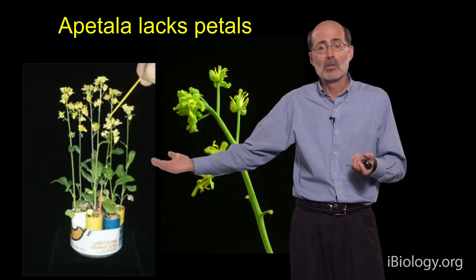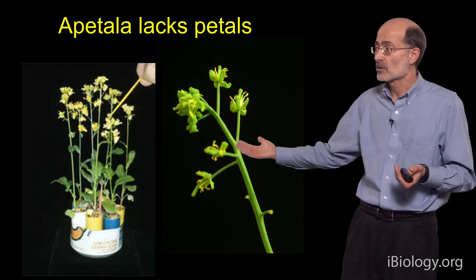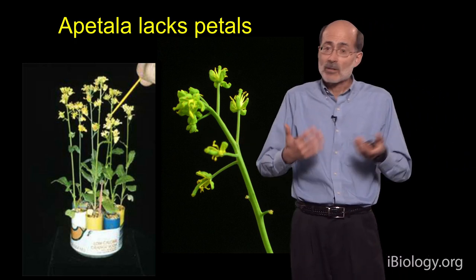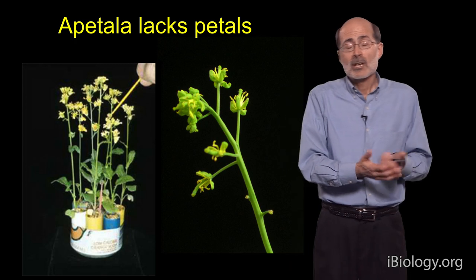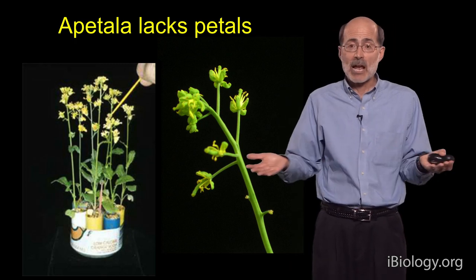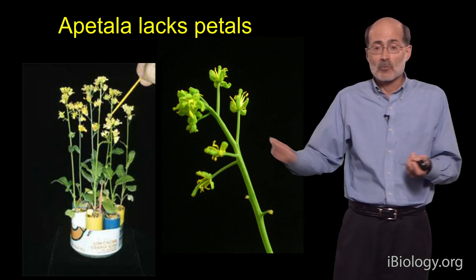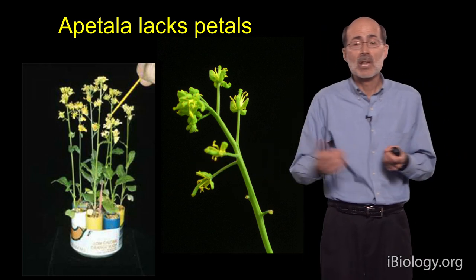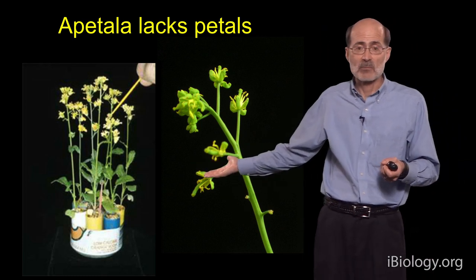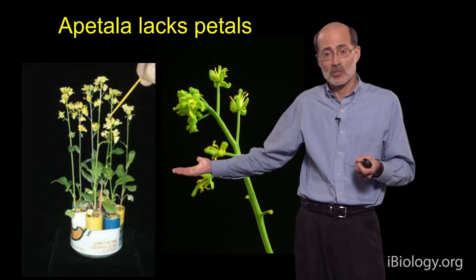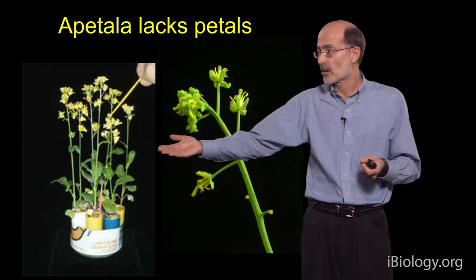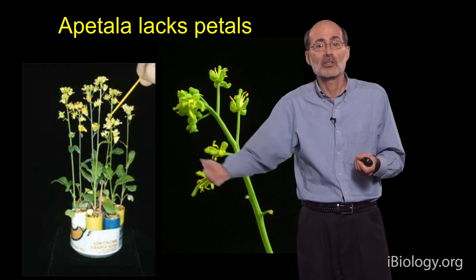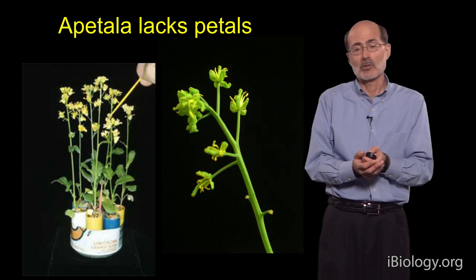Another example are mutants that don't have petals — this is the apetalic mutant. Petals, out in nature, are typically used by plants to attract pollinators. Of course, we are the pollinators of this plant, or your students will be in the classroom, so this mutant does just fine without petals as long as we pollinate it. Shown here is the wild type plant, where you can see all the color at the top of the plant representing the petals.